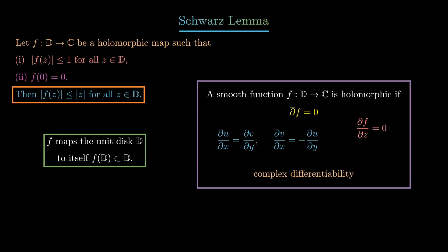Moreover, the conclusion of the Schwarz lemma, namely that the absolute value of f(z) is bounded above by the absolute value of z, tells us that f is distance decreasing.